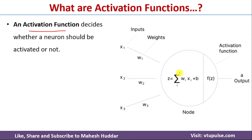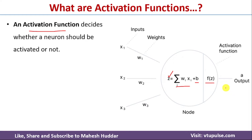First we will calculate the weighted sum — that is, we have inputs and weights, and we take the summation: W_i * X_i, then we add bias to get the weighted sum. On top of this weighted sum, we apply something called the activation function. Once we apply this activation function, based on its value we decide whether this particular node or neuron in the network is active or not.